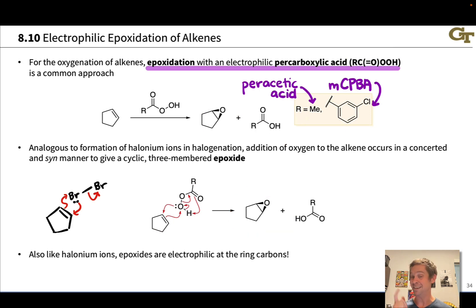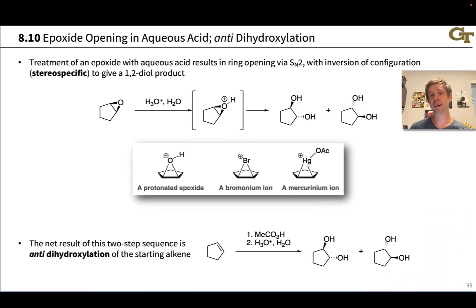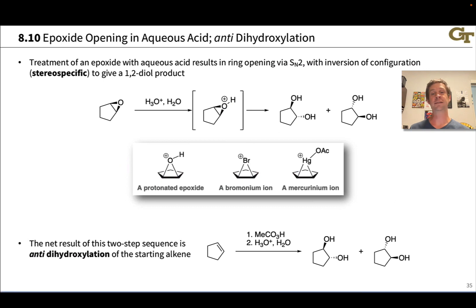Structurally, the epoxide is highly analogous to a halonium ion: the two carbons of the epoxide ring are electrophilic, the oxygen is a good leaving group, ring strain provides driving force, and the oxygen can support negative charge. Epoxides are much more stable than halonium ions, so we often make the epoxide using MCPBA and isolate it. If we want anti-dihydroxylation, the next step is to use aqueous acid to open the epoxide stereospecifically via an SN2 step.